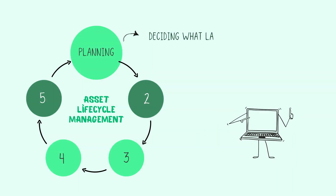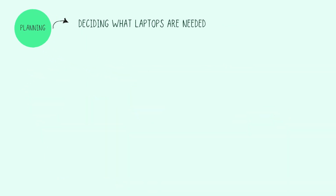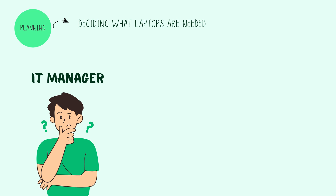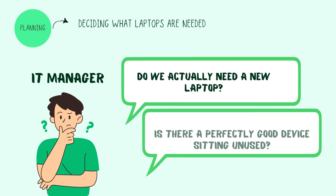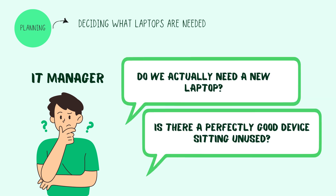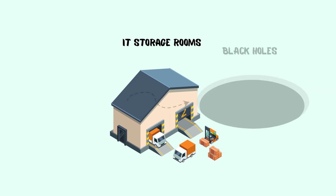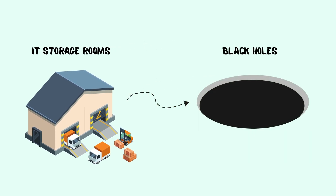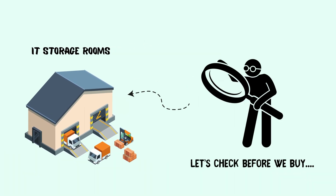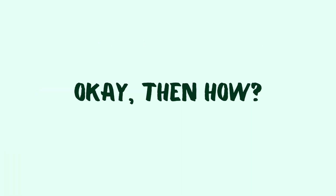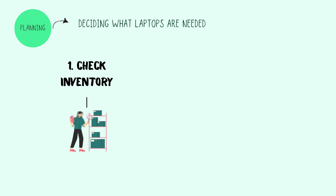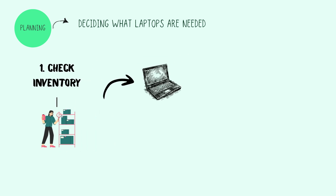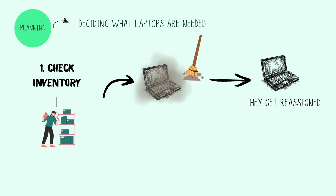Phase 1: Deciding what laptops are needed. Before ordering new laptops, IT first asks: do we actually need one? Or is there a perfectly good device sitting unused? Storage rooms tend to be black holes — let's check before we buy. Step 1: Check inventory. If laptops are collecting dust, they get reassigned. If stock is low, IT decides how many to buy.